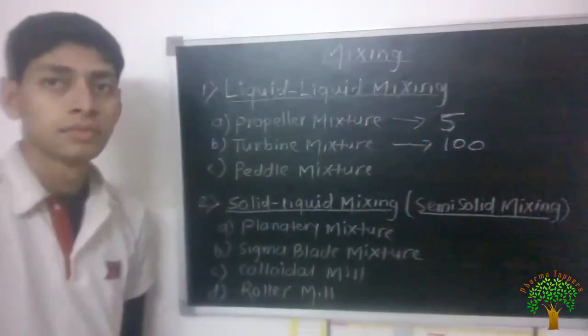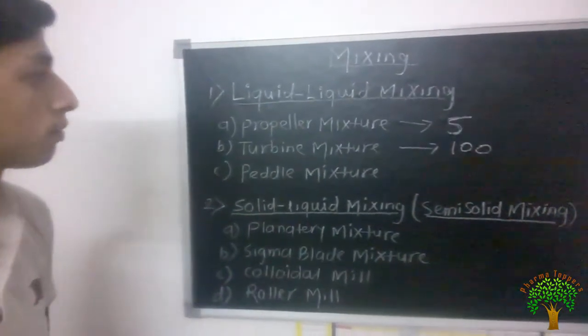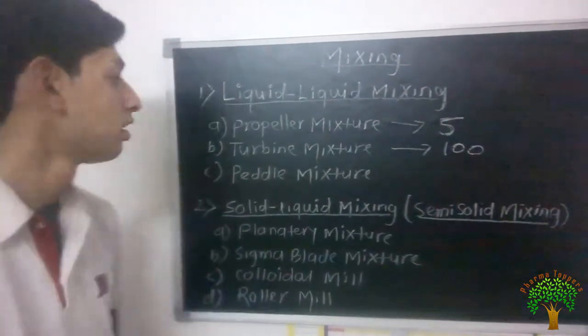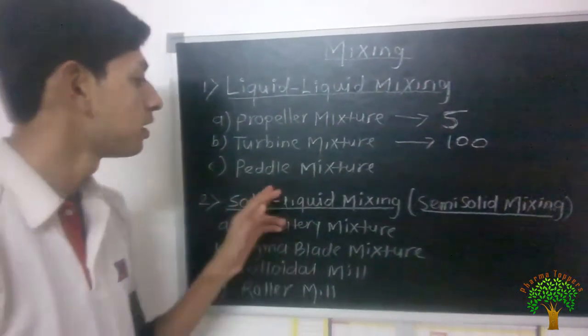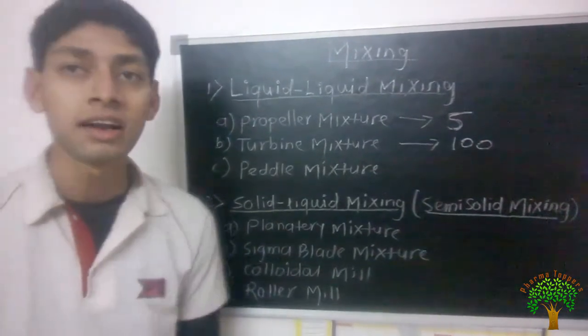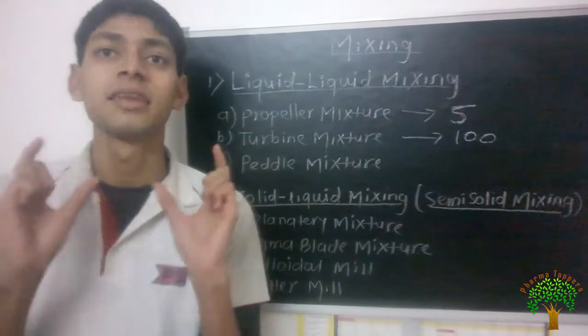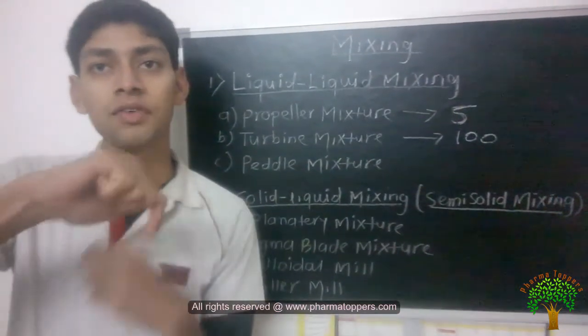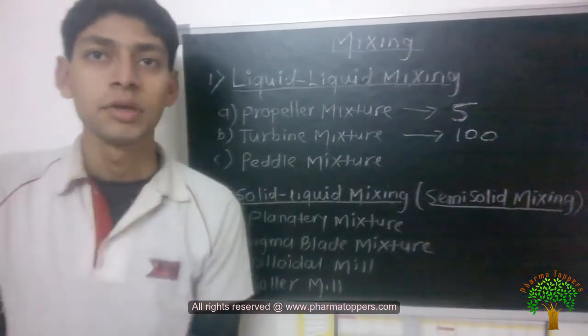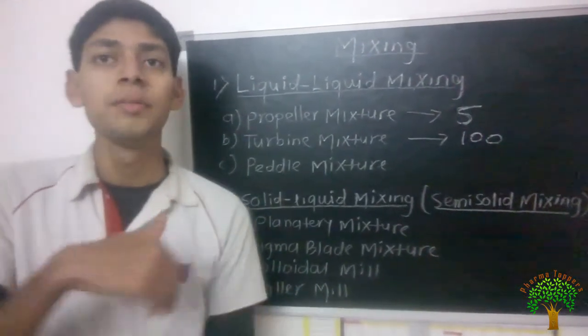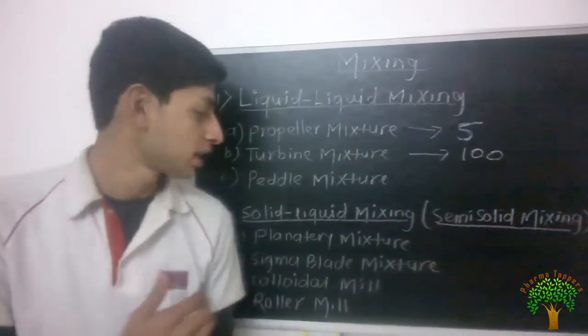If the viscosity of our liquid is more than 100 then the mixing can take place. In paddle mixture there are two blades and these blades act as an impeller. Due to that, the vortex formation is very less because of high viscosity of liquid. The shearing will be very less but the mixing can take place.